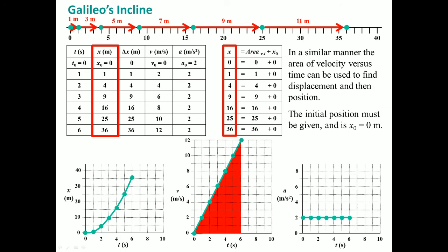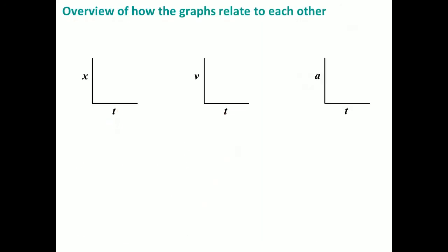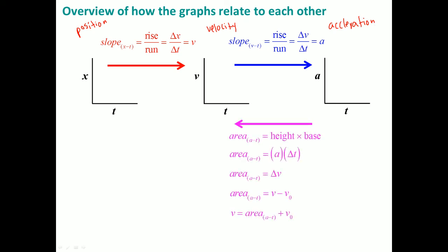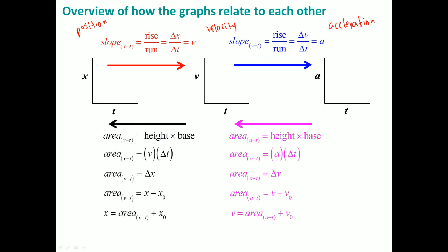The whole point is to understand how the graphs are related to each other. If you take the slope of position versus time, it gives you velocity. If you take the slope of velocity versus time, it gives you acceleration. Going backwards: the area under the acceleration graph gives velocity, and the area under the velocity graph gives position. This is what you should memorize and understand why.